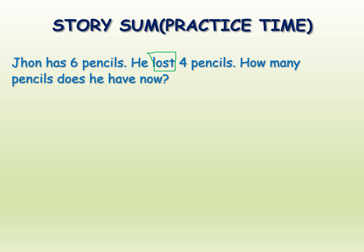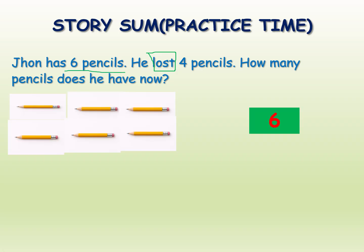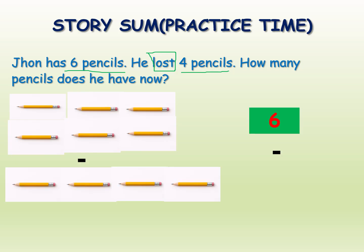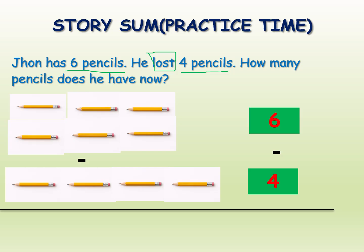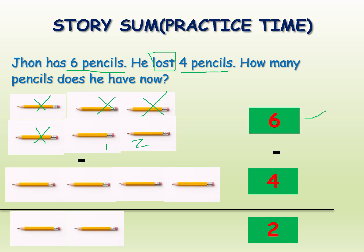Is it done, kids? I will tell now. John has six pencils. He lost four pencils, so we cross out four pencils. How many are left? One, two — two pencils. Six minus four is equal to two. Finally, how many does he have now? Two pencils.